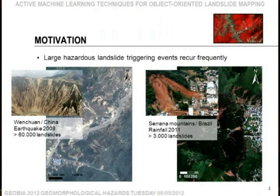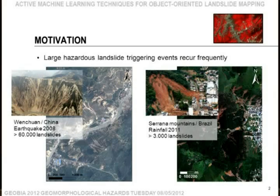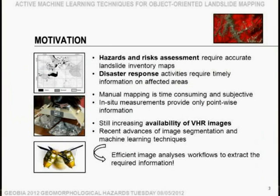The motivation for this research is that we frequently face very large triggering events by earthquakes, like here on the left in China, or you can look at the recent history of Rio de Janeiro State, where very heavy rainfalls, typically in December and January, trigger large landslide events. Some of you may still recall the images that went through the media in January 2011, triggering about 3,000 landslides. Mapping those features in time is a very challenging task, and we want landslide inventory maps for future hazard risk assessment. If we could do the mapping quickly, those maps could also be useful for disaster response.